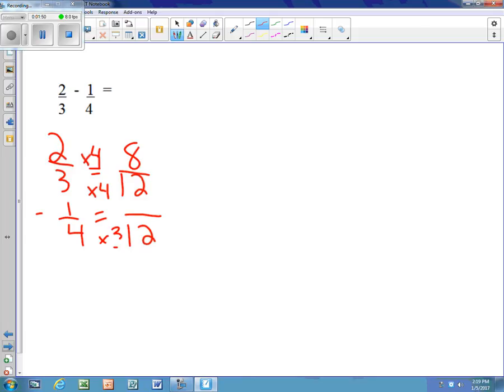4 times 3 is 12, and 1 times 3 is 3. So then we have 8/12 minus 3/12, which is 5/12.